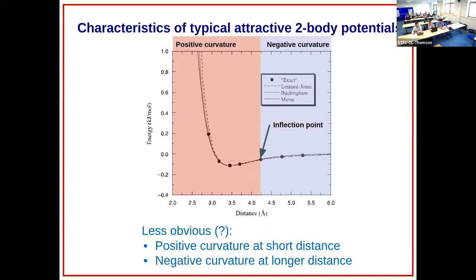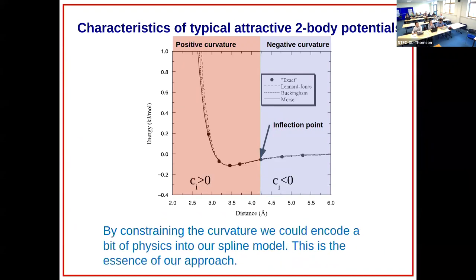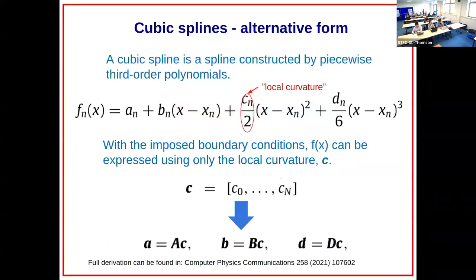This is the quality that we will be using in constraining our splines. That's why I pointed out the role of this c coefficient in the spline. The idea is simply to use the spline and constrain it in such a way that the coefficient describing the local curvature goes from a region with positive curvature to a region of negative curvature. That's the essence of it. What it takes is to reformulate the fitting procedure such that you can express this spline entirely in terms of the local curvature.